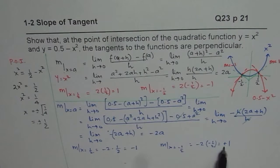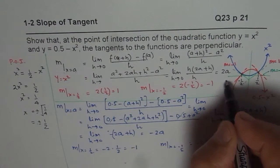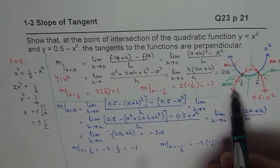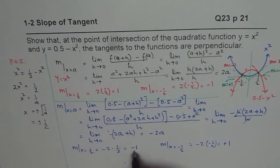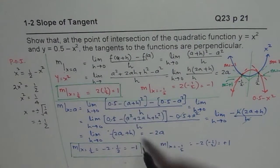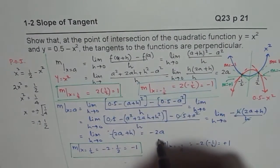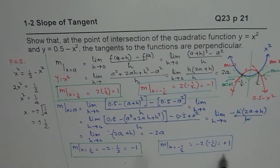At x equals one half, the slope of the first function is 1 and the slope of the second function is minus 1. At x equals minus one half, the slope of the first function is minus 1 and the slope of the second function is plus 1. In both cases, when you multiply the two slopes you get minus 1, which shows that the tangents are perpendicular at both points of intersection. I hope that helps — thank you and all the best.